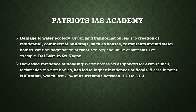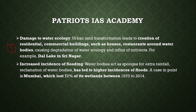First, damage to water ecology. Urban land transformation leads to creation of residential and commercial buildings such as houses and restaurants around water bodies, causing degradation of water ecology and influx of nutrients. For example, the Dal Lake in Srinagar.